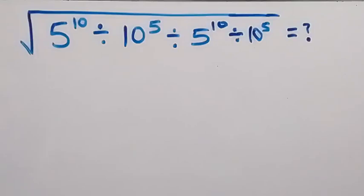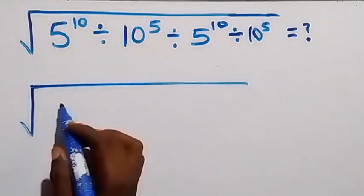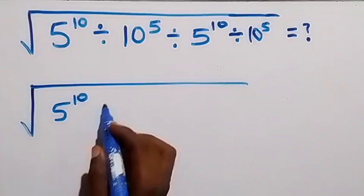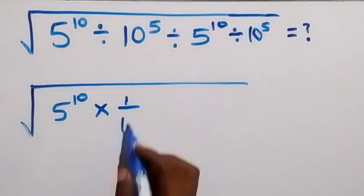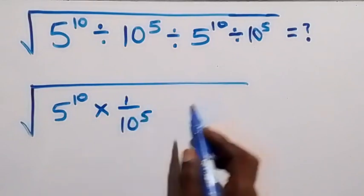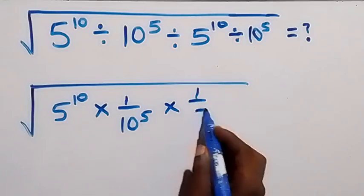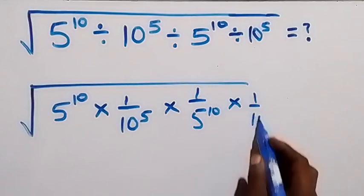Hello, you are welcome. How to simplify this nice math exponent problem. From here we can write this again as square root of 5 raised to power 10, and this will change to multiplication and become 1 over 10 raised to power 5, also times 1 over 5 raised to power 10.